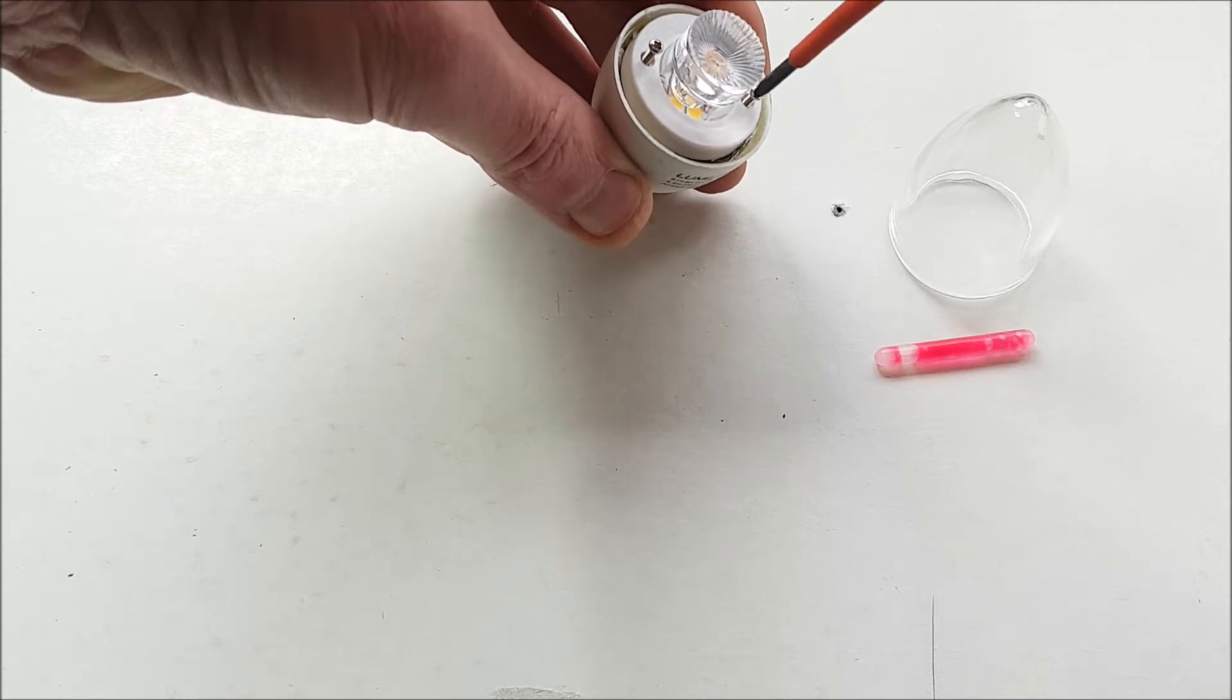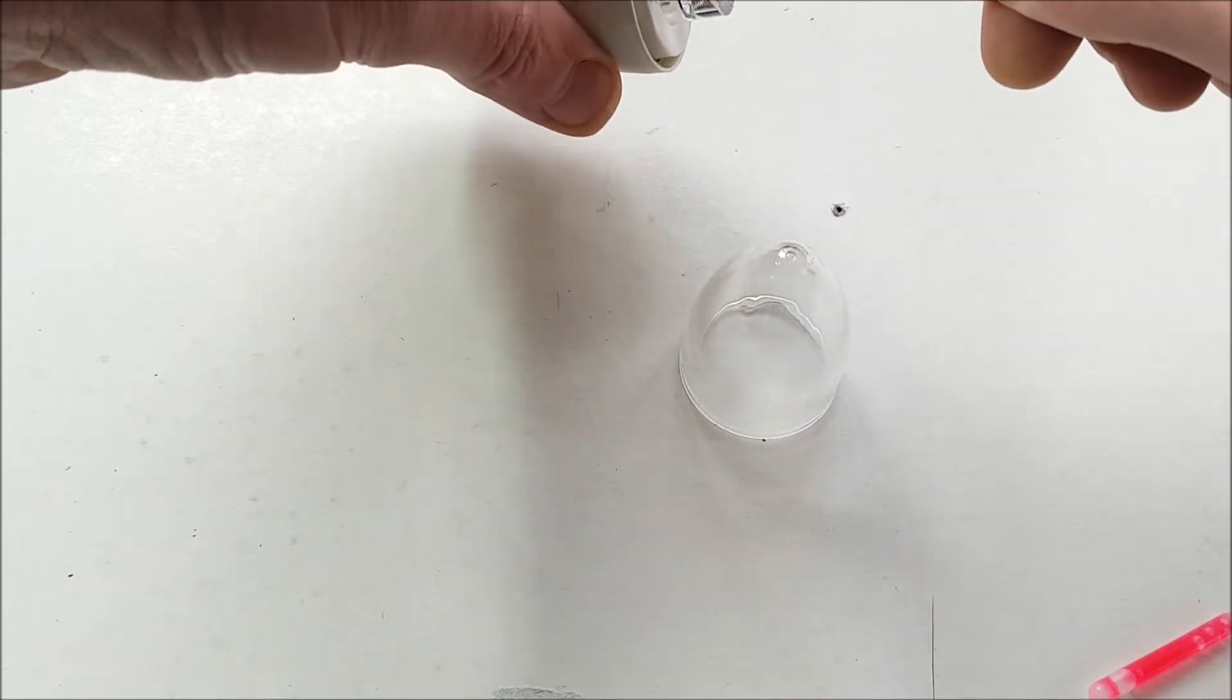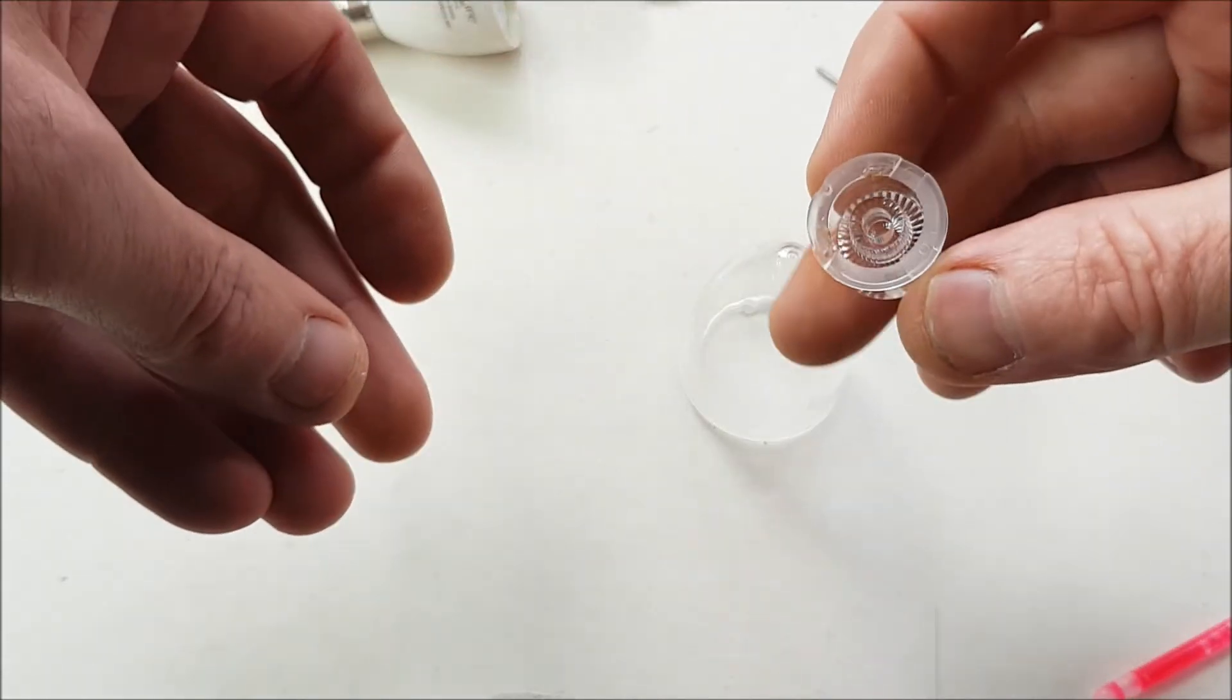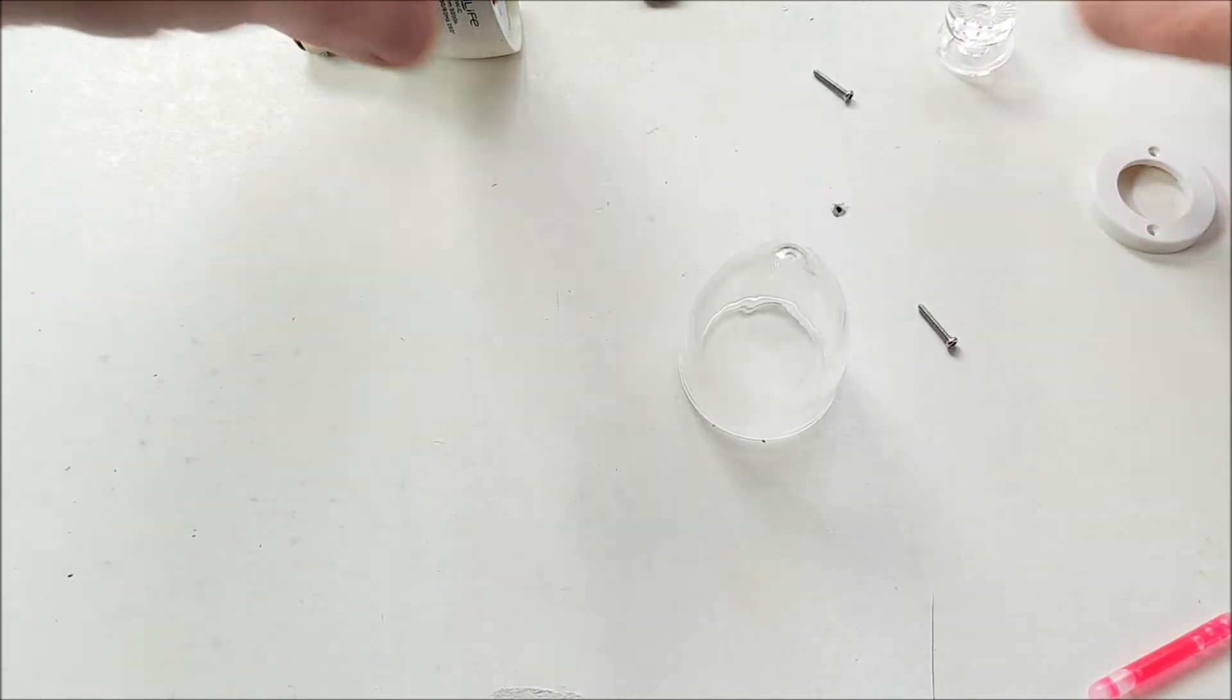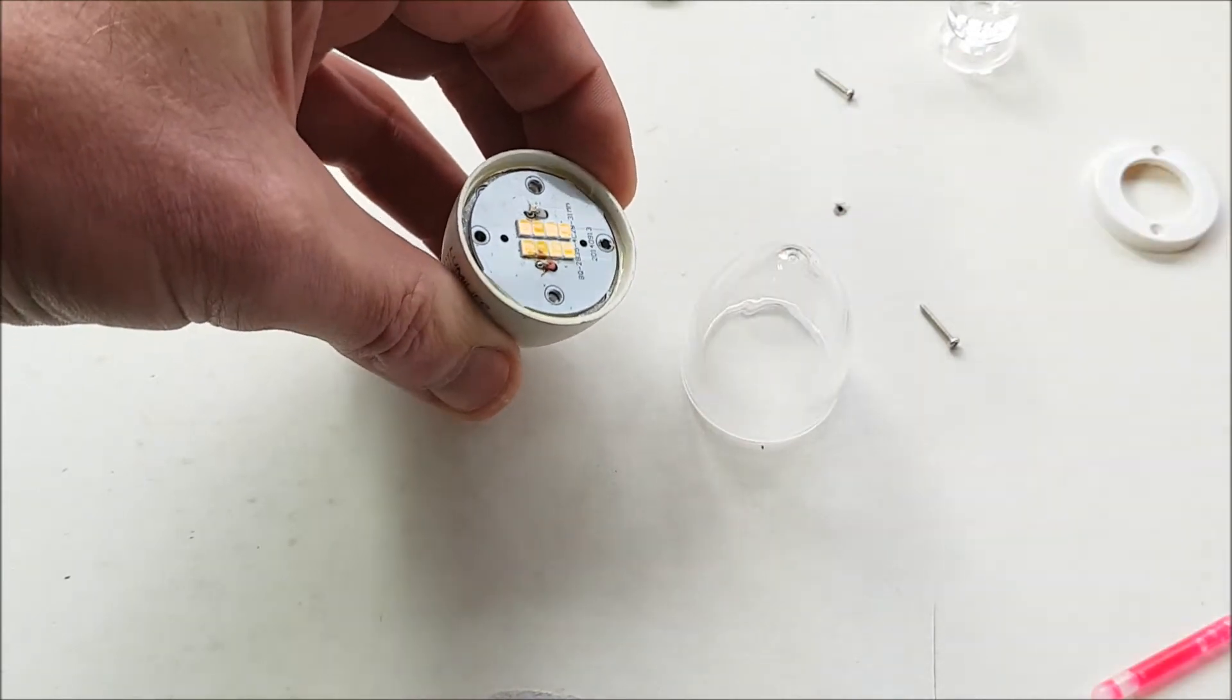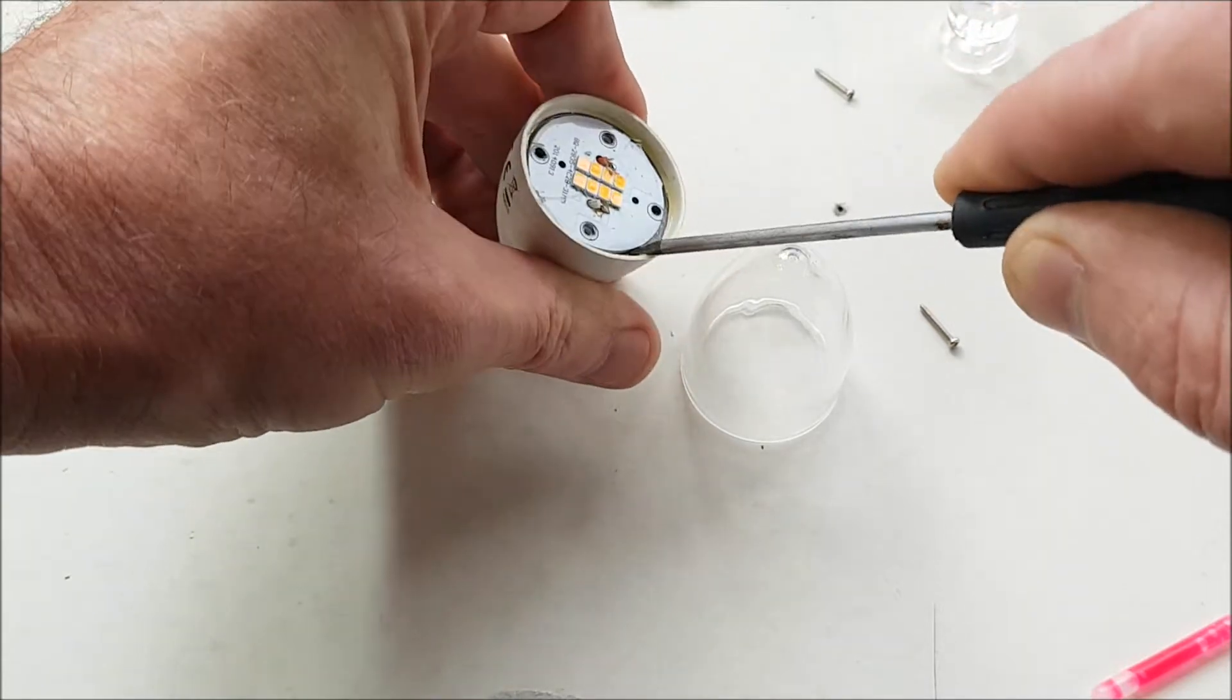Okay, so we got a little diffuser there. I think I'll be able to use that for something in the future. Let's see what's in here—these are the SMD LED chips. We're not interested in that. All we want to do is take all the bits out of it.